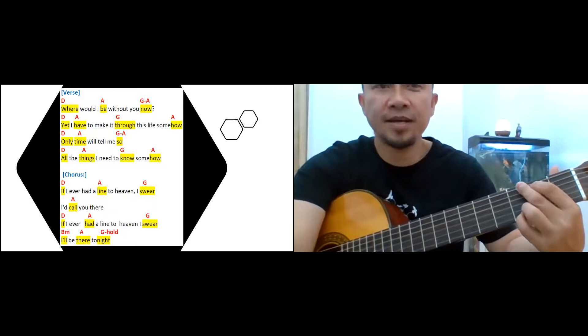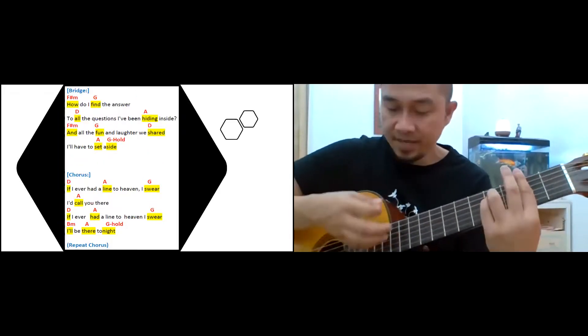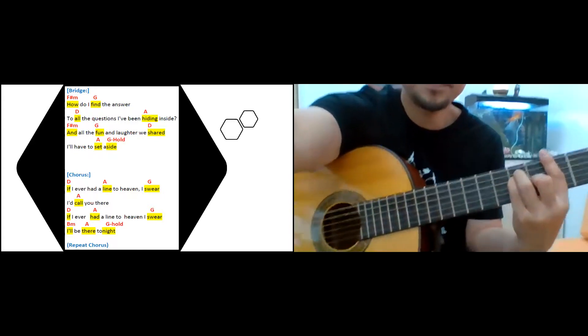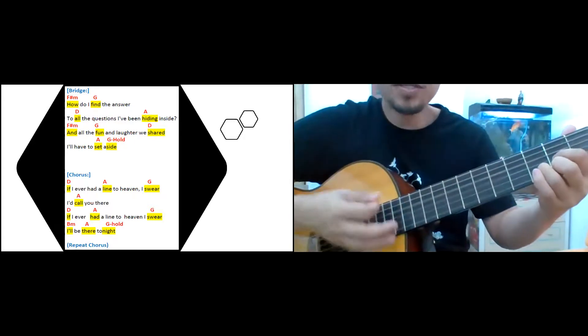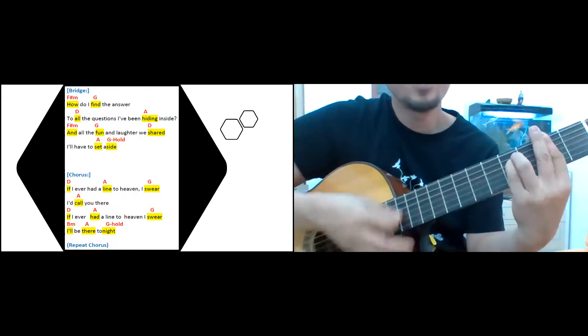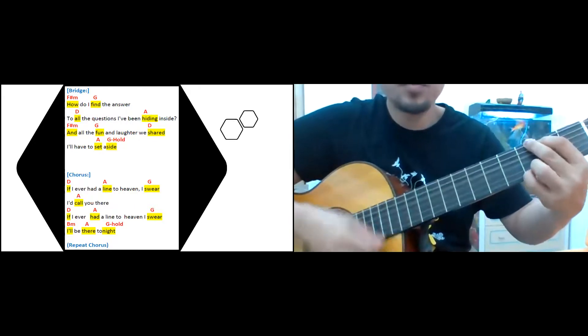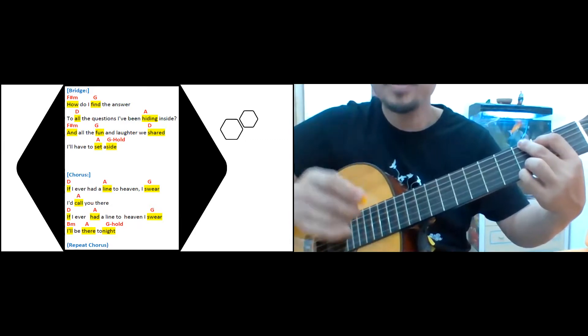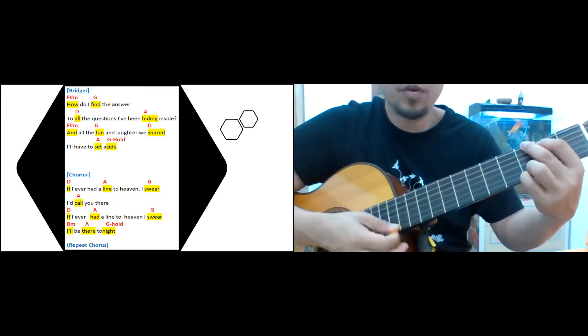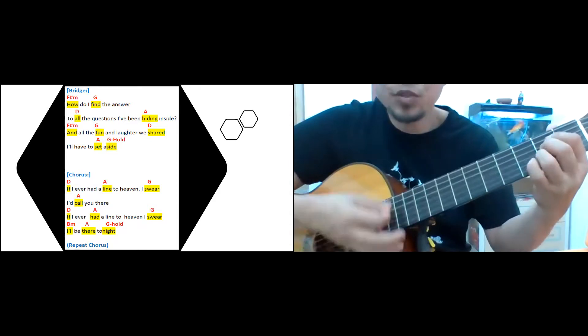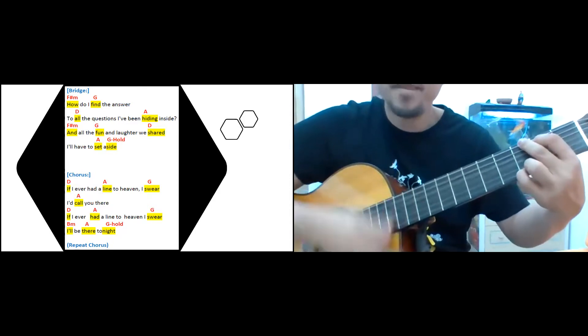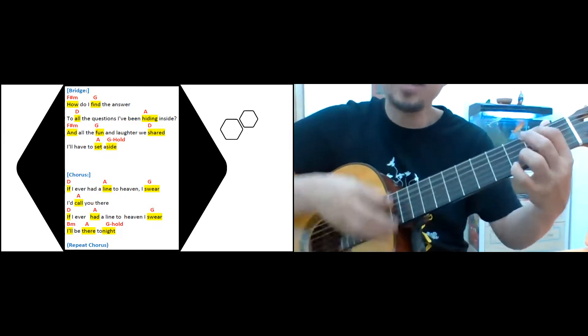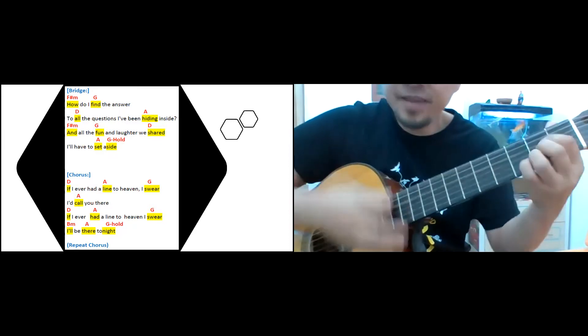Then, punta na tayo sa doon tayo sa may bridge, okay? F sharp minor. Baba ko na mante, ah. All the questions I've been hiding inside, all the fun and love that you should have to set aside. So, tandaan natin, ang ating bagsak ay yung paglipat ng chord. If I ever had a light to heaven, I swear, I'll call you there. If I ever had a light to heaven, I swear, I'll be there tonight.